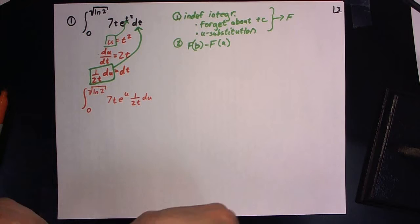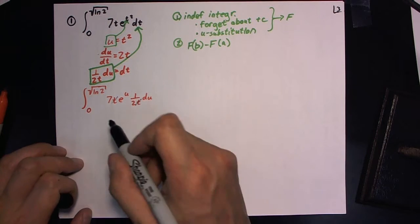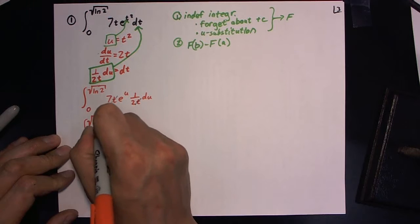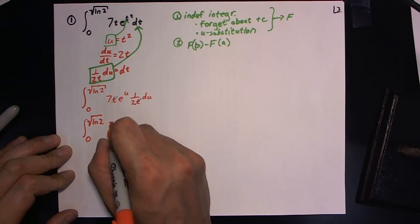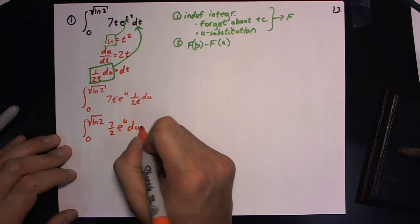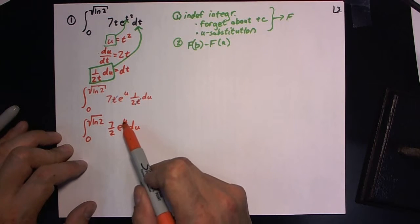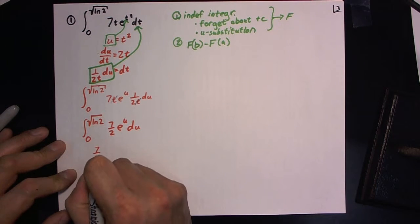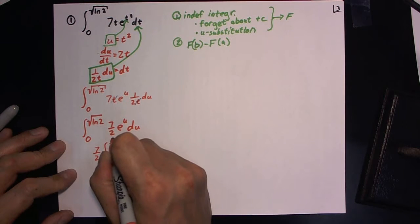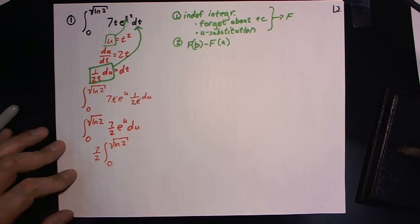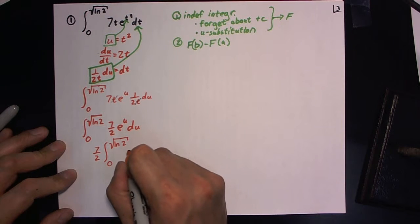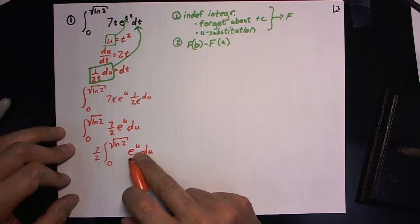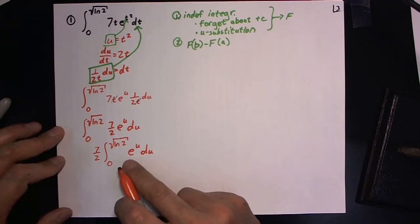Now as you can see here, we've got a little bit of cancellation happening. That t and that t cancel each other out. And so what we're left with is just constants times e to the u du. Well, this is a pretty easy integral. Take the seven halves, move it outside. Now we just evaluate e to the u du. Well, integral of e to the u du is just e to the u.